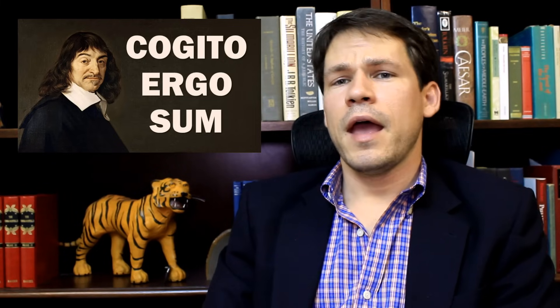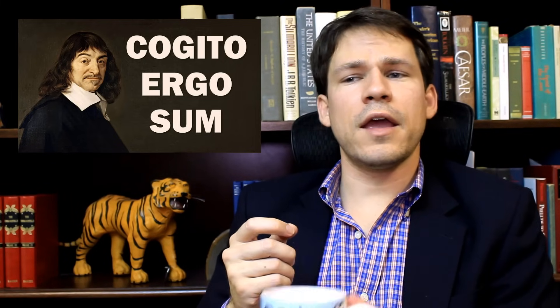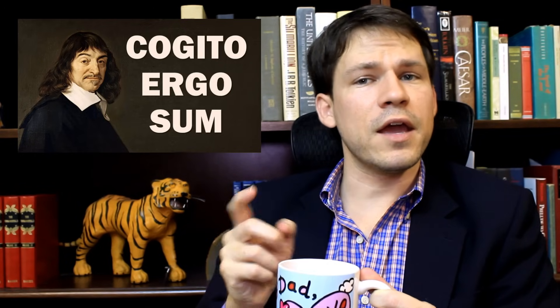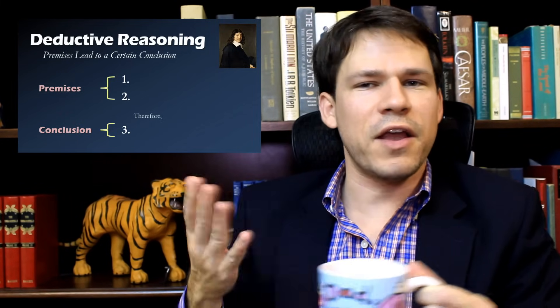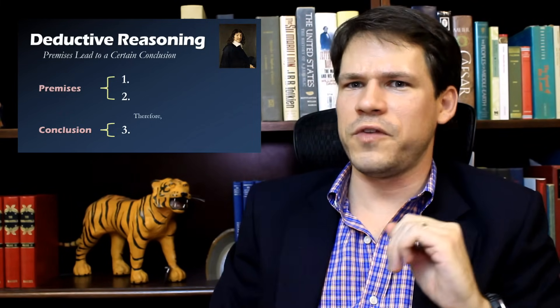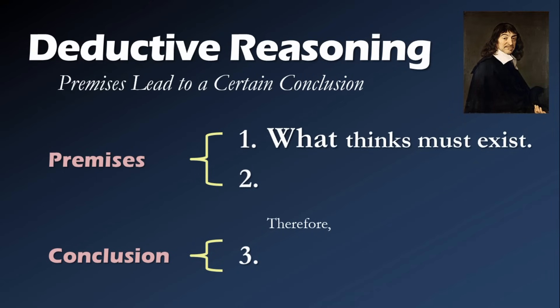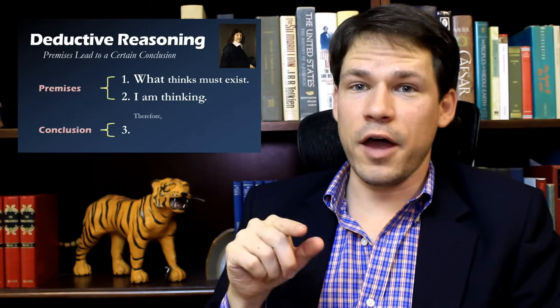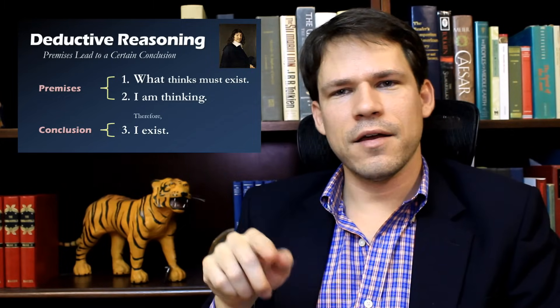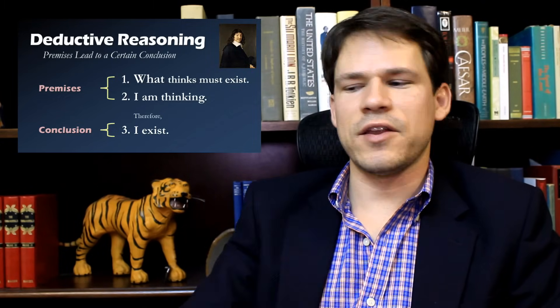I've got a video on Rene Descartes, who was a philosopher of the scientific revolution. Descartes is most famous for saying cogito ergo sum - I think, therefore I am. Cogito ergo sum is actually a statement of deductive reasoning. Descartes is trying to figure out if he exists. He says: first, what thinks must exist - something that thinks can only do that if it exists. Second, I am thinking. Therefore - ergo - I exist. I think, therefore I am. Deductive reasoning.